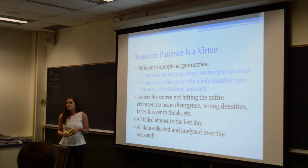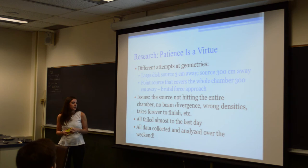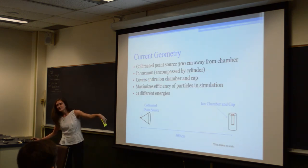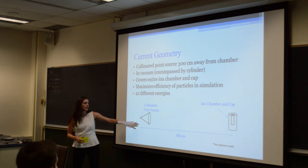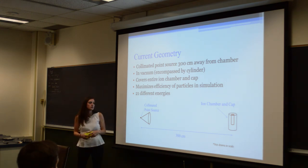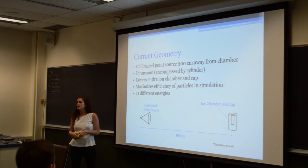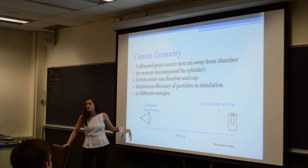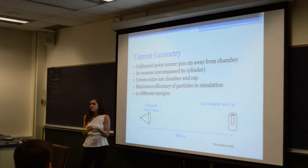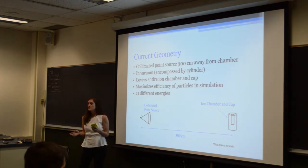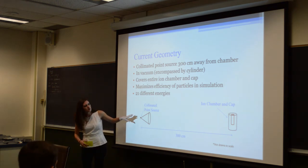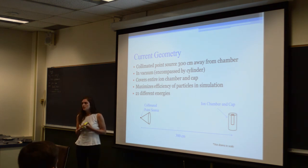Another problem was that I had the densities mixed up in the input files all summer, but we fixed that this past weekend. With this new geometry we finally got results this weekend — it took all summer and we didn't think we were going to get results, but then we were really happy. The new geometry is still a point source, but we found a way to collimate it into a cone that covers the entire ion chamber, still 300 centimeters away. That way the software doesn't have to track particles going everywhere. We also changed from a large sphere universe to a cylinder that covers the geometry to maximize efficiency. With these two changes we got better results with less error in less time and with fewer particles, and we did this for all 21 energies.